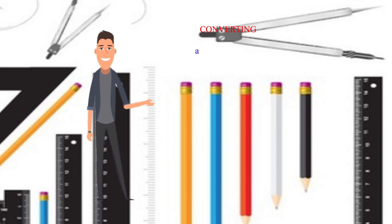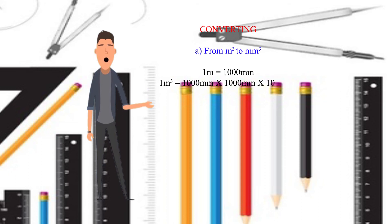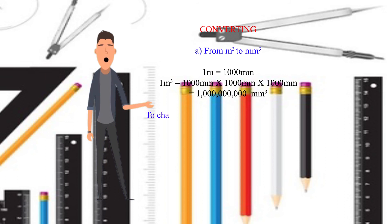Converting. A: From cubic meters to cubic millimeters. 1 meter equals 1000 millimeters. Therefore, 1 cubic meter equals 1000 mm × 1000 mm × 1000 mm, which equals 1 billion cubic millimeters. To change cubic meters to cubic millimeters, you multiply by 1 billion.